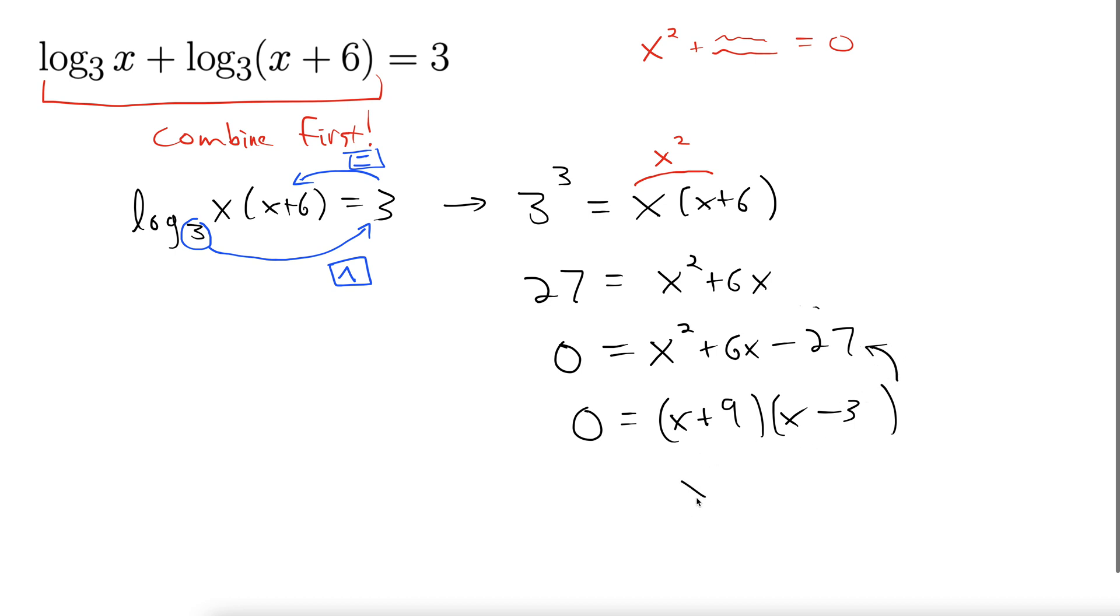So then we can solve it out. Set each one of these equal to 0. x equals negative 9, x equals 3.